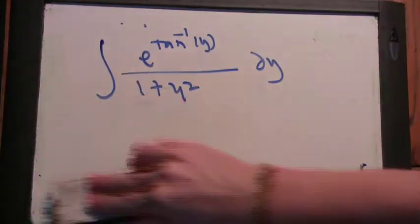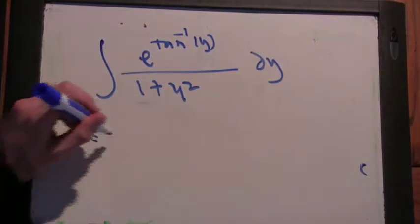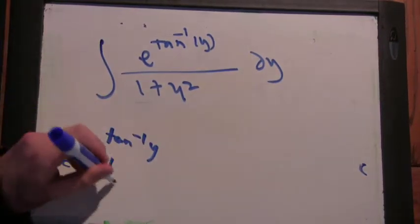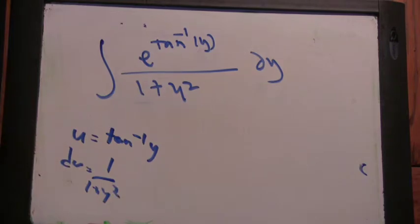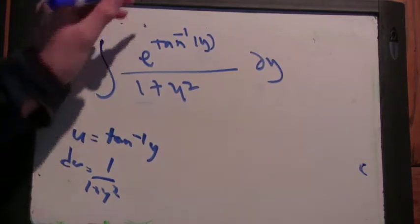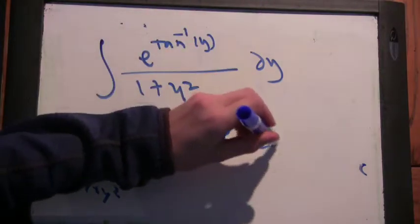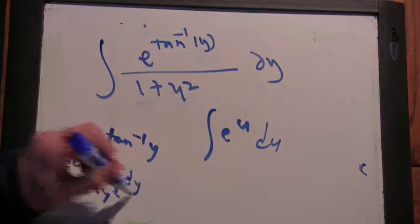So here u is arctan of y, so du is 1 over 1 plus y squared. And that kind of gets rid of everything in the problem. It just turns into the integral of e to the u du.